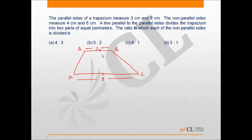The non-parallel sides are 4 and 6 respectively. A line parallel to the parallel sides divides the trapezium into two parts of equal perimeters. The ratio in which each of the non-parallel sides is divided is: 4 to 3, 3 to 2, 4 to 1, or 3 to 1.